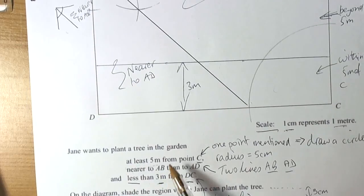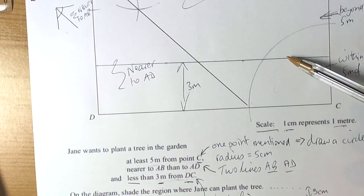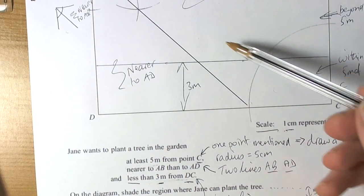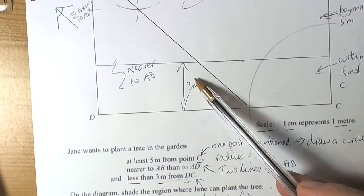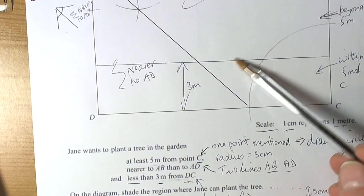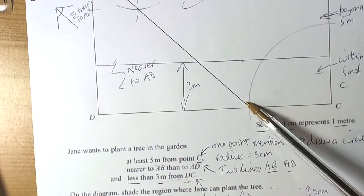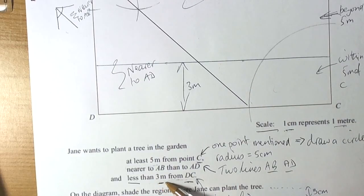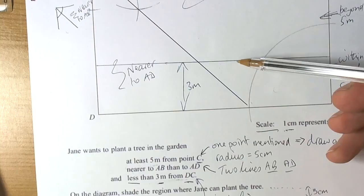Let's go through the conditions. It has to be at least five metres from point C, so that means we're over here somewhere. It's saying we have to be nearer to AB, so we have to be over here somewhere. And then, it's saying we have to be less than three metres, so we have to be down here somewhere.